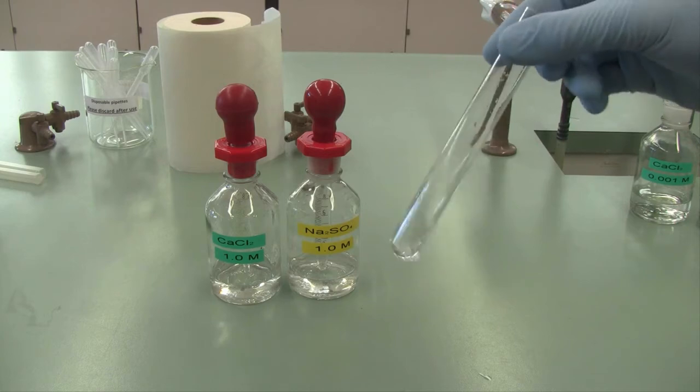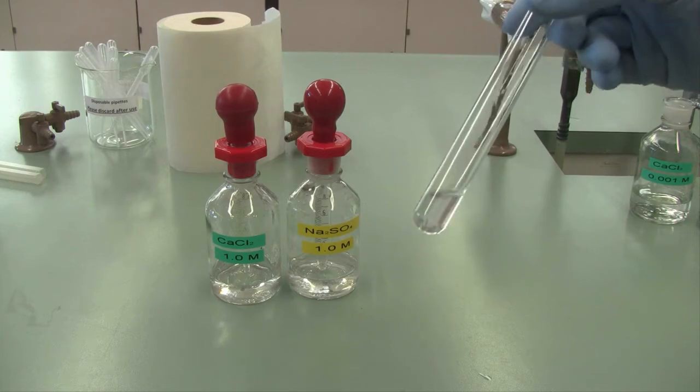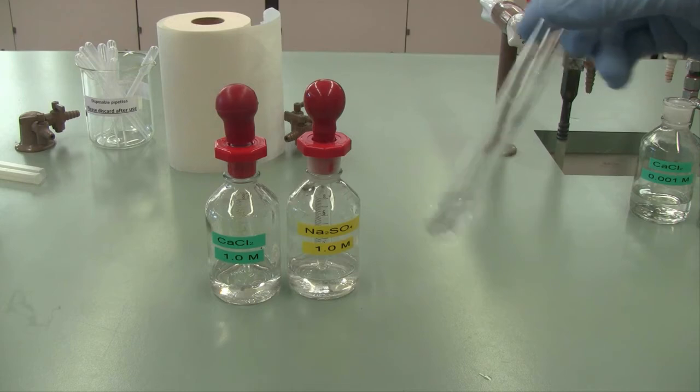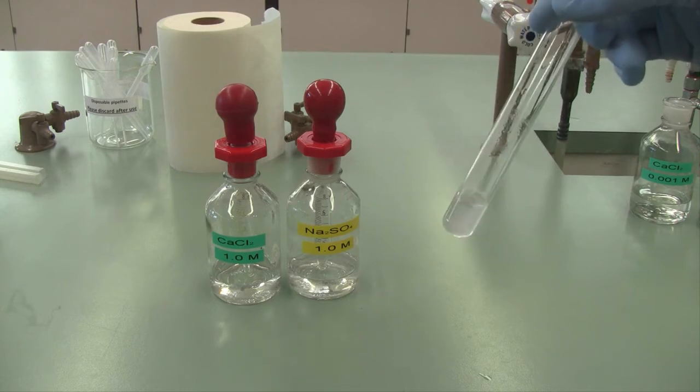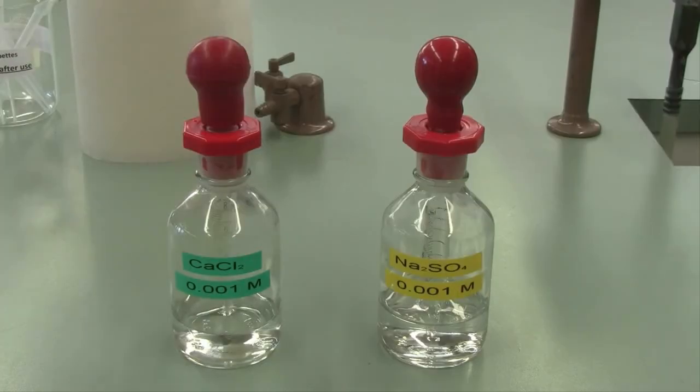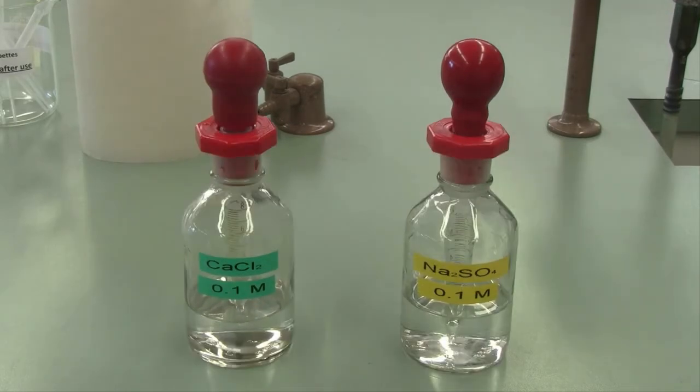You can see from this demonstration that sometimes it can take quite some time to see the formation of a precipitate. We're then going to try this reaction again, using 0.001 molar calcium chloride and sodium sulphate, and then 0.1 molar calcium chloride and sodium sulphate.